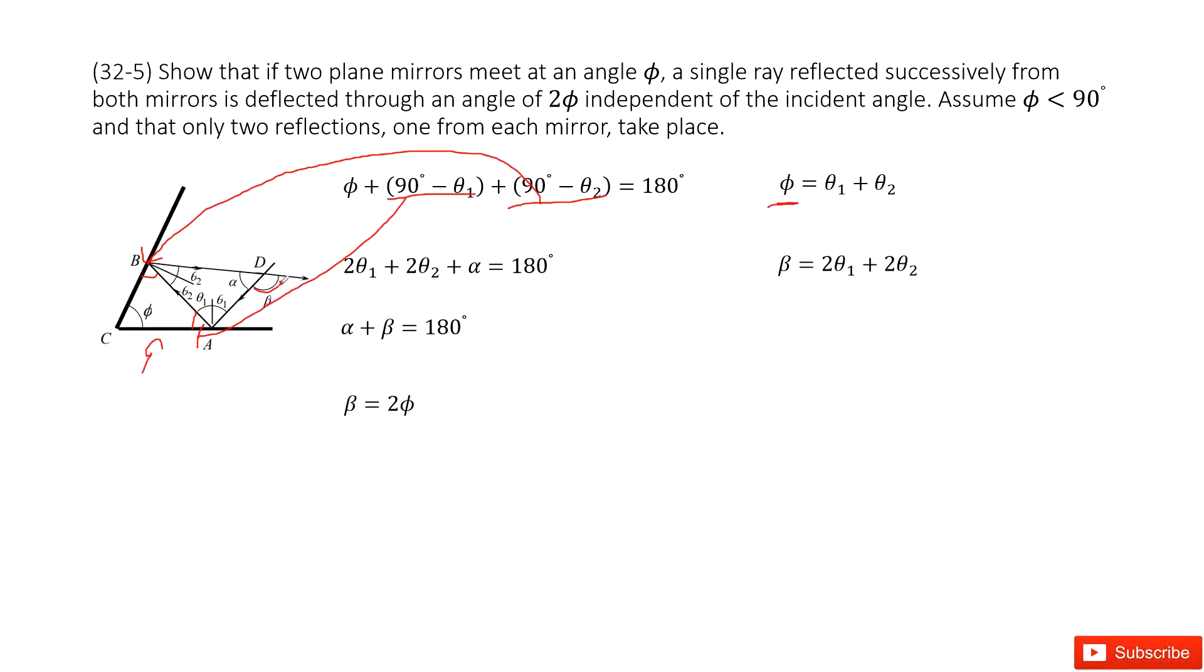Similarly, we look at this triangle, triangle ABD. In this triangle, we have 2 theta 1 plus 2 theta 2 plus alpha equals 180 degrees. We can look at this line and see that beta equals 2 times theta 1 plus 2 times theta 2.